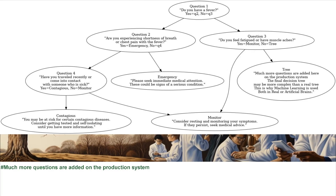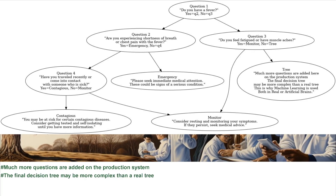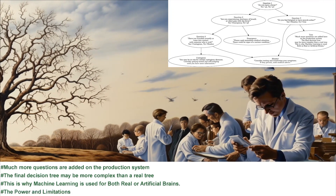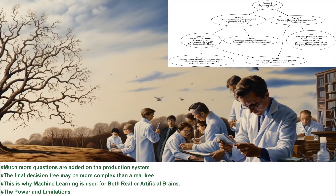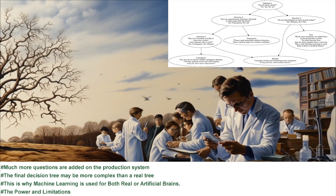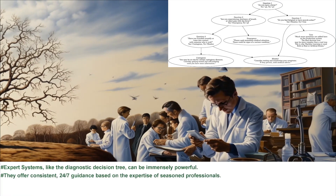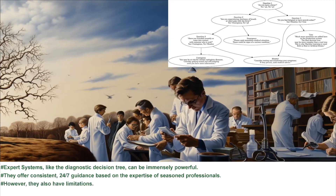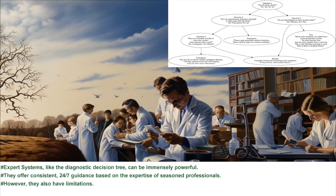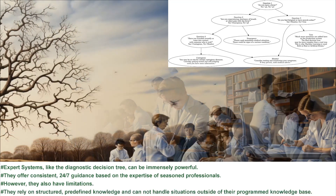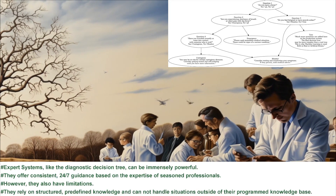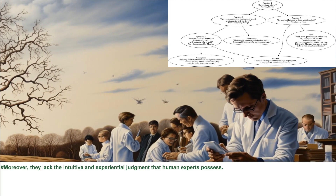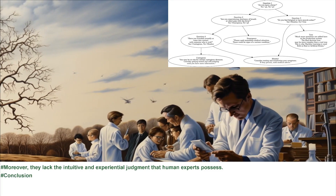Much more questions are added in a production system, and the final decision tree may be more complex than a real tree — this is why machine learning is used for both real and artificial brains. Expert systems, like the diagnostic decision tree, can be immensely powerful, offering consistent, 24/7 guidance based on the expertise of seasoned professionals. However, they also have limitations: they rely on structured, predefined knowledge and cannot handle situations outside their programmed knowledge base, and they lack the intuitive and experiential judgment that human experts possess.